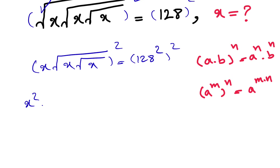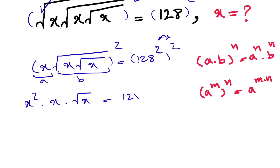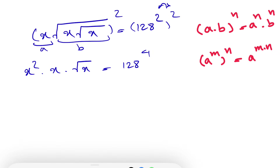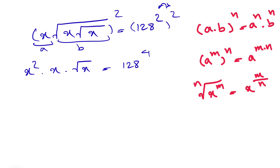Here we have x squared times — we can get rid of the square root — so this is our a and this is our b. We can get rid of the square root, giving us x times square root of x, and on the right side we multiply these two to get 128 to the power of 4. We also know that the nth root of x to the power of m equals x to the power of m over n, and when we have a to the power of m times a to the n times a to the o, this equals a to the power of m plus n plus o.